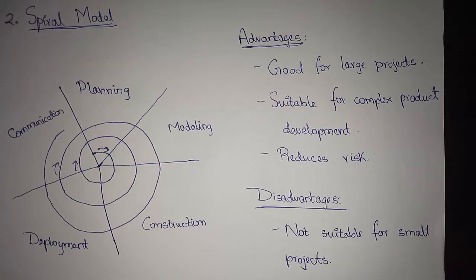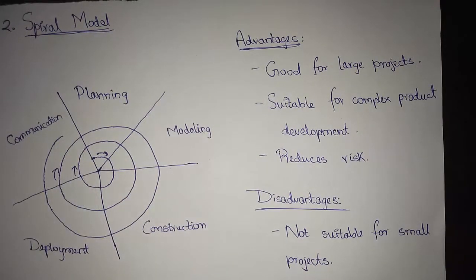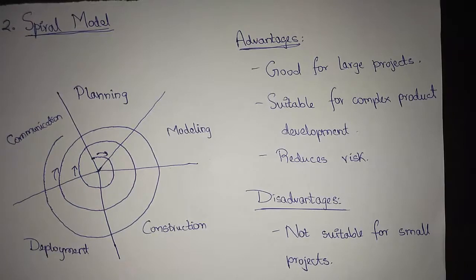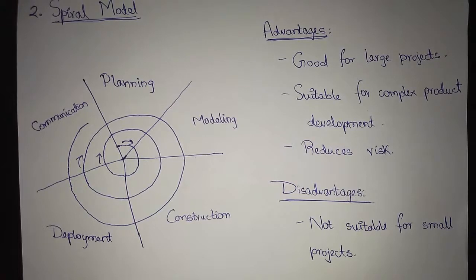The first circuit represents the concept development project and continues through multiple iterations until that stage is completed. If the concept is to be developed into an actual project, a new development project commences — that is, each iteration takes place as a new product. It considers risks at all stages of the product, and if properly applied, should reduce risks before they become problematic. The advantage is that it is suitable for large and critical projects and reduces risks. The main disadvantage is that it is costly in nature and not much suitable for smaller projects.